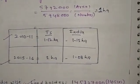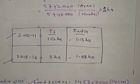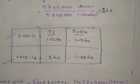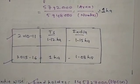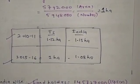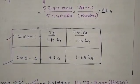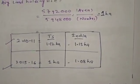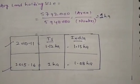In the Telangana region, the average landholding is 1.112 hectares in the old census and 1.15 hectares, then 1.08 and 1.18 hectares respectively. This is the average landholding size.